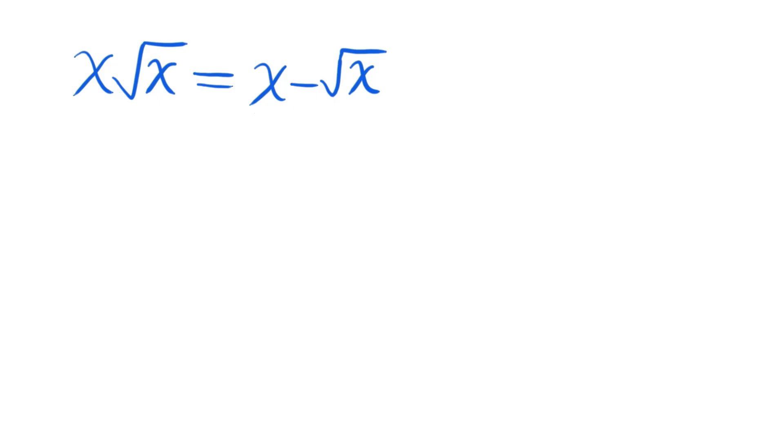This is a structure like a·p = a - p. Now let's factor out the right-hand side like √x(√x - 1), and we have x√x on the left-hand side.